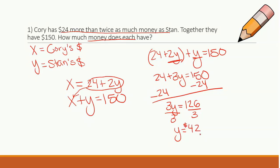And I'll mark it as dollars, because it's money, right? Now let's figure out if Stan has $42, how much does Corey have? Well, I know both of them together make 150, right? So let's plug that into my equation. So I have x plus 42 equals 150. So if I subtract 42 from both sides, we get x equals 108.